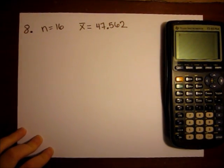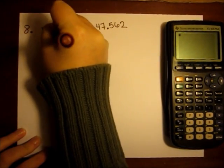It is known from past data that the standard deviation of the age is 5. So sigma equals 5.